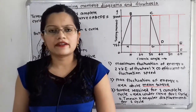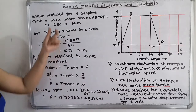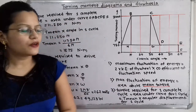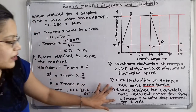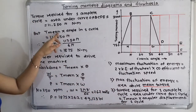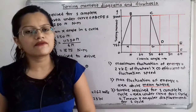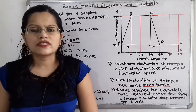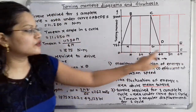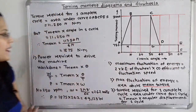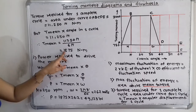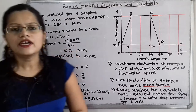The torque required for one complete cycle equals 11,250 Nm. Using the formula, this equals mean torque multiplied by the total angle for one cycle, which is 6 pi. Solving for mean torque gives T_mean equal to 1875 Nm.